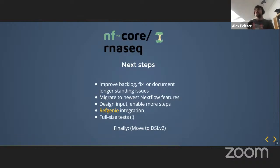As RNA-Seq is used across multiple institutions, there was also a discussion about integrating RefGenie in one of the upcoming versions, which will probably have to wait until it's pushed forward in NF-Core tools. Also missing is full-size testing for RNA-Seq — currently it's only tested with a very small E. coli or yeast sample. The hope is to run full-size RNA-Seq test data to identify potential issues more easily.